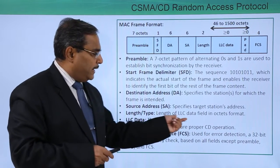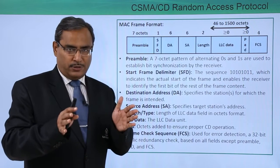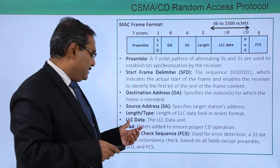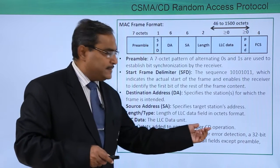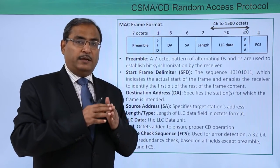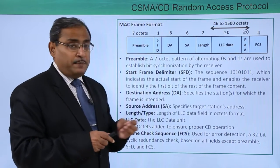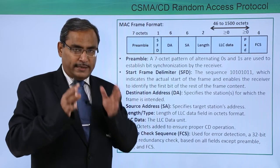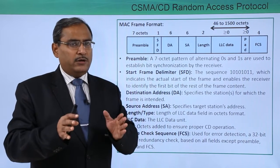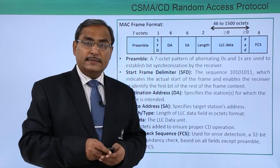The Length field contains the length of the LLC data field in octets. The LLC data unit is the actual payload — the actual data being transmitted. After the LLC data, there is a Padding field: octets added to ensure proper Collision Detection (CD) operation. The pad has no fixed size; if the distance between sender and receiver is long, the pad will have a larger number of bytes. While padding is being transmitted, the sender node is still transmitting and listening for any collision.